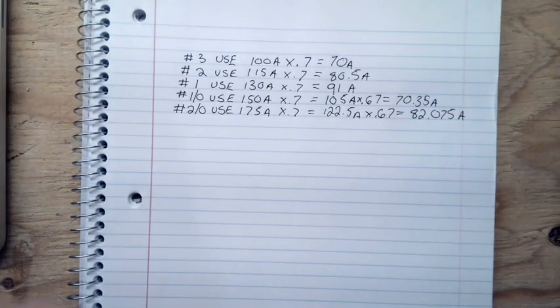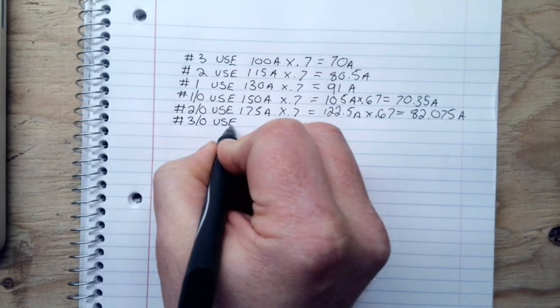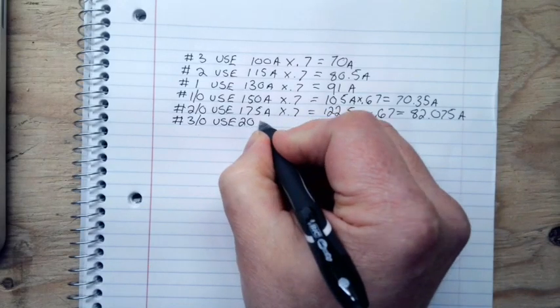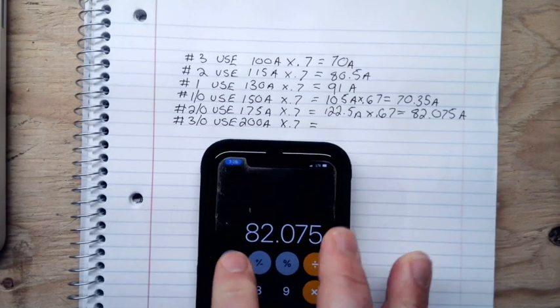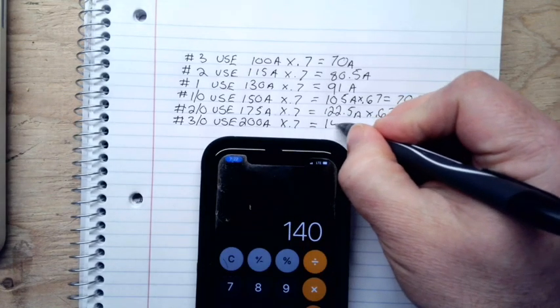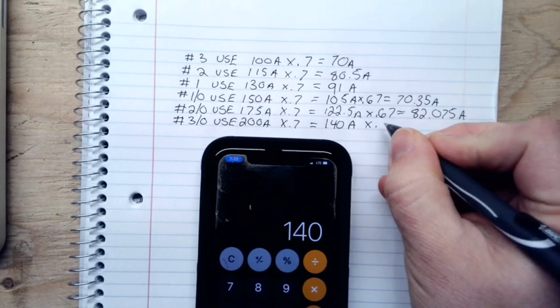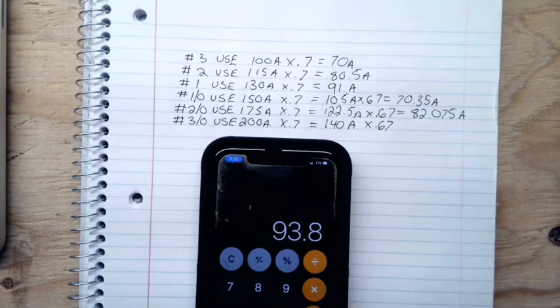So now I've got to go to our number three ought U.S.E. And it says here that number three ought is good to 200 amps. It's quite a jump. 200 amps times 0.7 is equal to... 200 times 0.7 equals 140 amps. All right, again, we know that that's good enough to correct for the adjustment factor, but will it be enough for the correction factor? Let's see. So now we're going to take that 140 times 0.67 equals 93.8. Still not good enough.